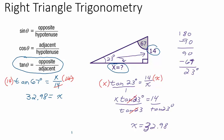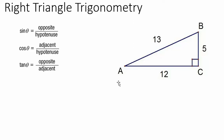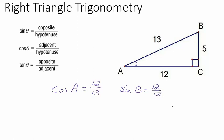Now let's look at problems you might see in your textbook where all the sides are already given. For example: what's the cosine of angle a? Cosine is adjacent over hypotenuse. If 5 is opposite a, then 12 is adjacent to a, and the hypotenuse is 13, so the answer is 12 over 13. What's the sine of b? Sine is opposite over hypotenuse — opposite b is 12, so the answer is 12 over 13.